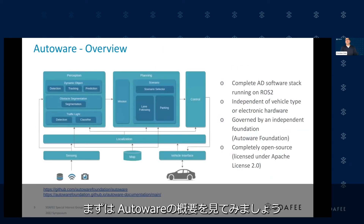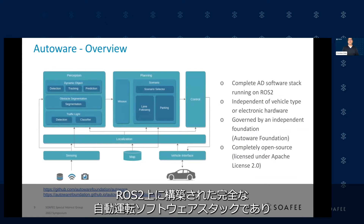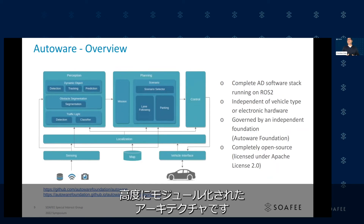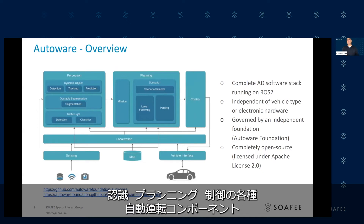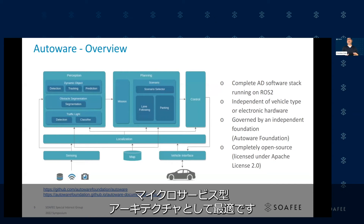Just to start with an overview of Autoware: this is an open-source project managed by the Autoware Foundation. It's a complete autonomous driving software stack built on top of ROS2 and openly licensed under the Apache 2.0 framework. It's a very modular architecture, so the different components of the autonomy stack — perception, planning, control — are well-defined modules with APIs built on ROS2. So it really lends itself very well for a microservices-type architecture.